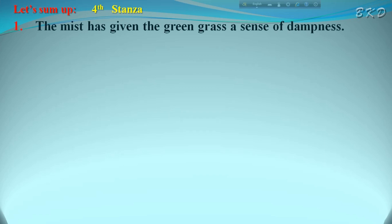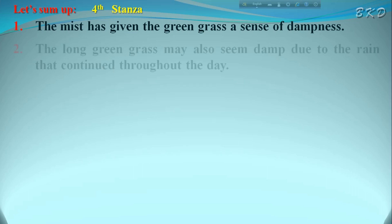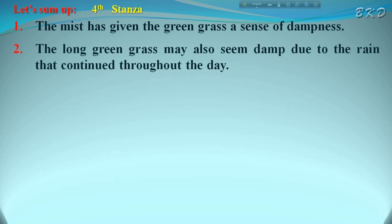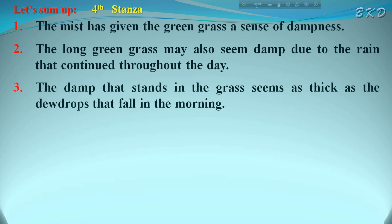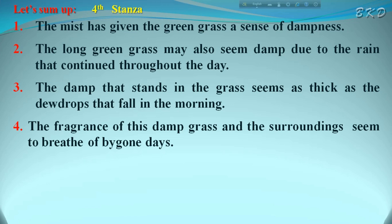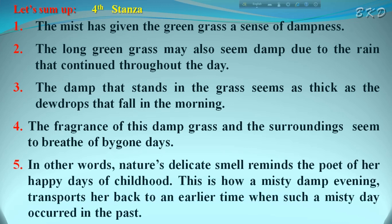Let's sum up the fourth stanza. The mist has given the green grass a sense of dampness. The long green grass may also seem damp due to the rain that continued throughout the day. The damp on the grass seems as thick as the dew drops that fall in the morning. The fragrance of this damp grass and the surroundings seem to breathe of bygone days and tell the poet of the days she has left behind. Nature's delicate smell reminds the poet of her happy childhood days. This is how a misty, damp evening transports her back to an earlier time.